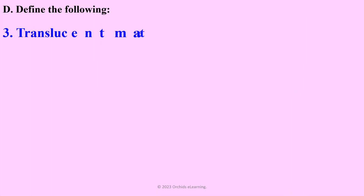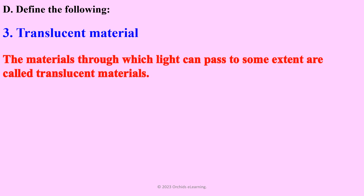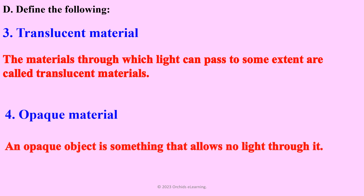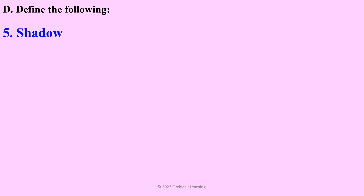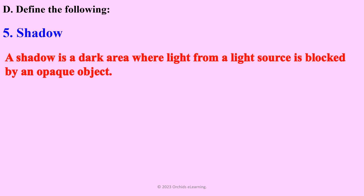Translucent material: materials through which light can pass to some extent are called translucent materials. Opaque material: an opaque object is something that allows no light through it. Shadow: a shadow is a dark area where light from a light source is blocked by an opaque object.